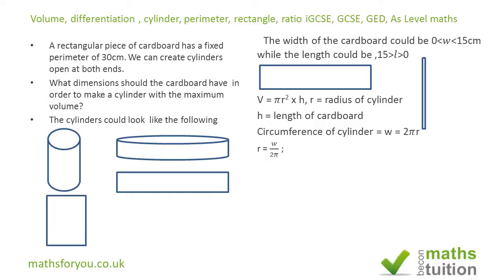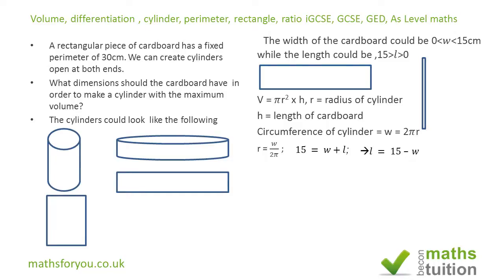Similarly, we can express l (the length, or h) in terms of w. Since the perimeter is 30, we have w + l = 15, which is half the perimeter. If you wish to derive a general formula, you can replace 15 with p/2 where p is the perimeter of the cardboard. This gives us l = 15 − w.